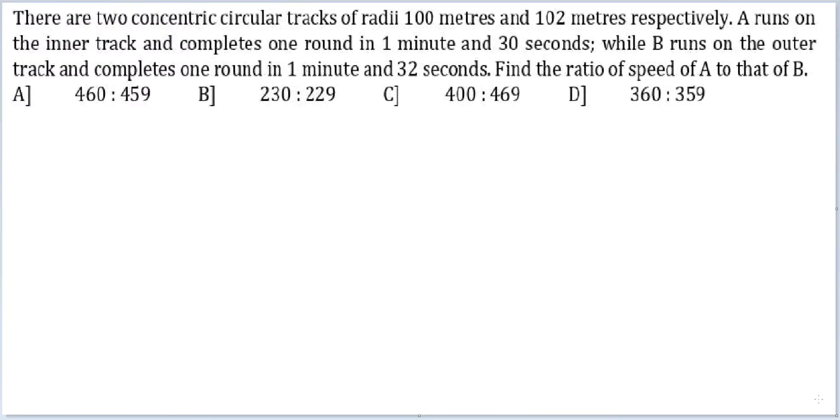Let's look at this question. There are two concentric circular tracks of radii 100 meters and 102 meters respectively. A runs on the inner track and completes one round in 1 minute and 30 seconds, while B runs on the outer track and completes one round in 1 minute and 32 seconds. Find the ratio of speed of A to that of B.